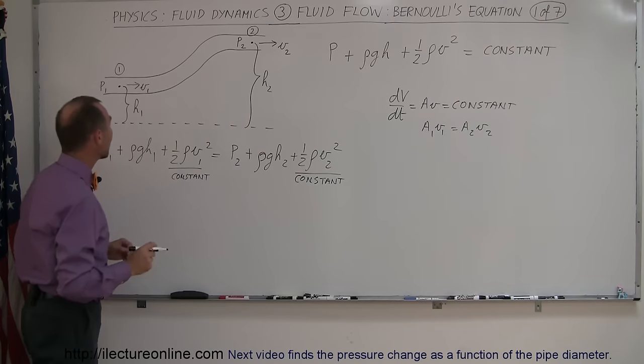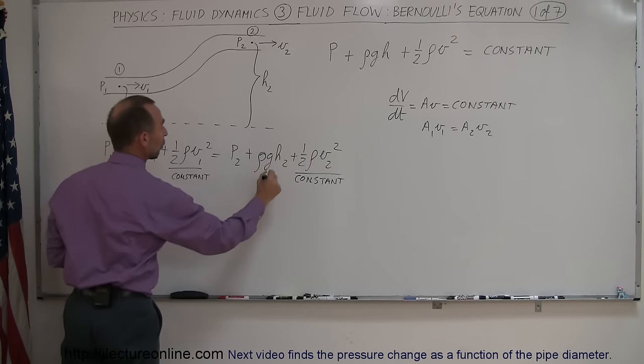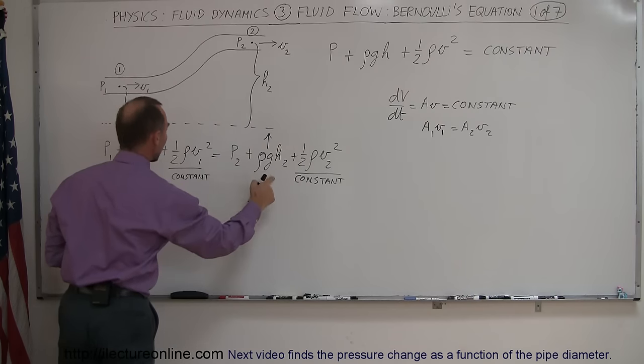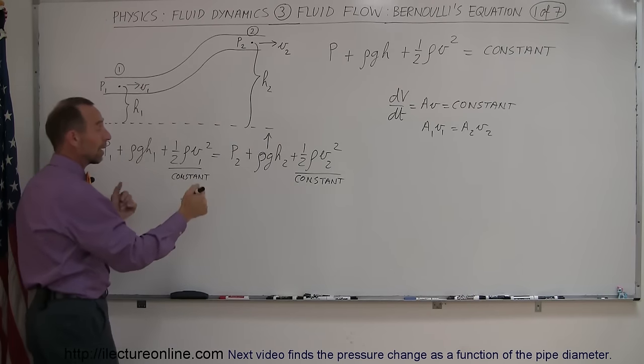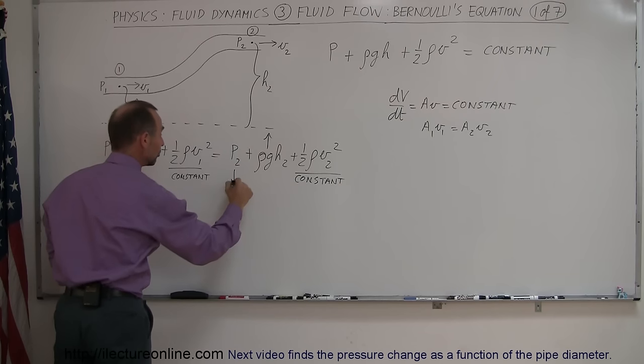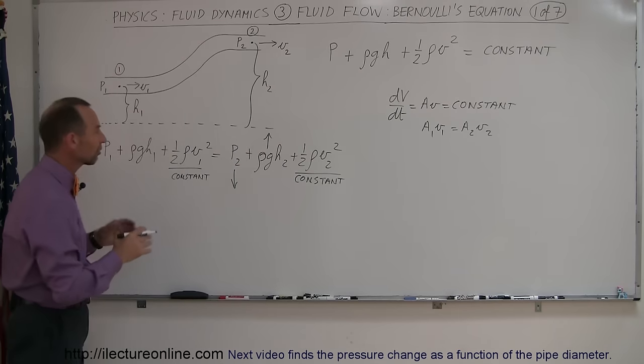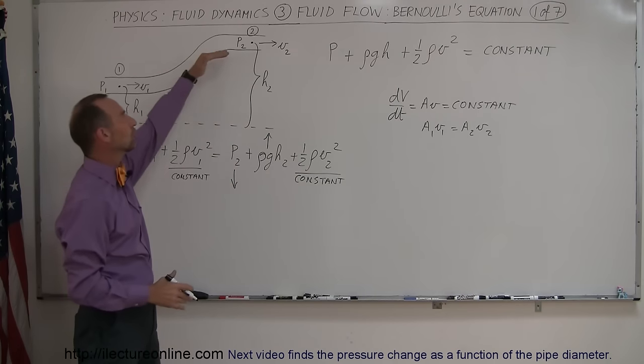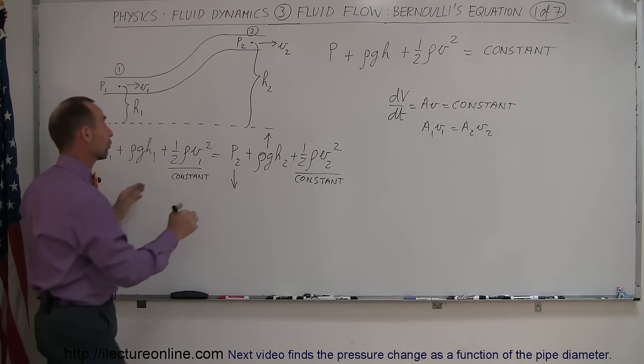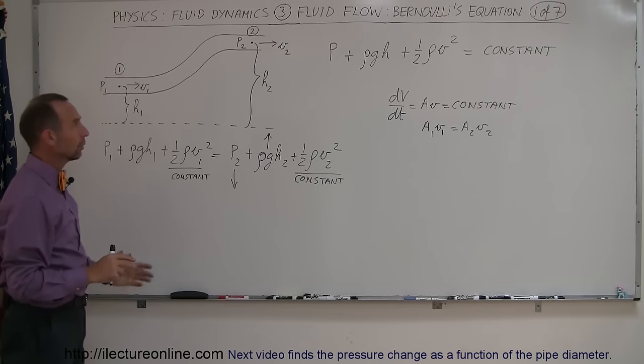Which means that if the height increases, that means that here rho gh two has increased relative to rho gh one. That means, in order for the equation to balance, that the pressure at two must be less than the pressure at one. And that's how you have to read that equation. That's a good way to take a look at Bernoulli's equation when only the height changes and nothing else changes. And of course, because of that, the pressure has to change as well. All right. Now, let's do an example.